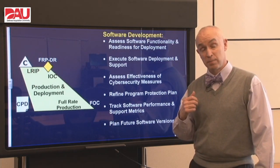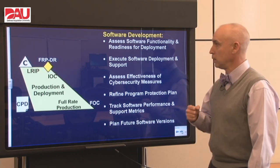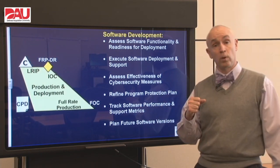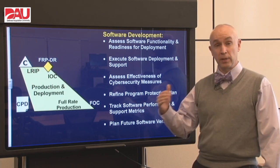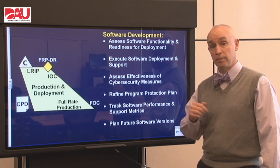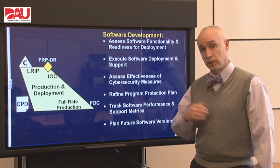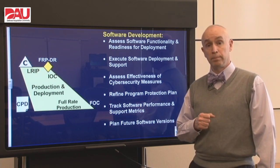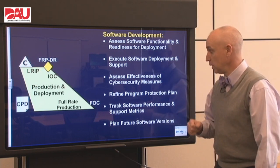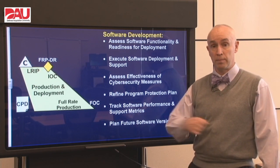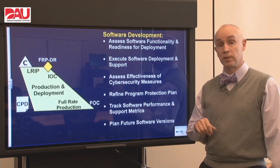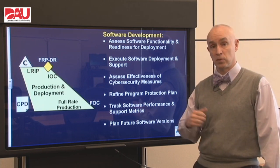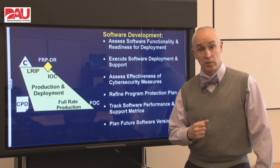Our software developers are often still doing some development even after Milestone C. They need to assess that their software is functional and ready for deployment, execute that deployment and support, and make sure there's a real plan for how different software builds get out to the field and that training is done. They also need to keep their finger on the pulse of cybersecurity, ensuring the system can withstand attacks and continuing to refine the program protection plan with field feedback. We want to track performance and support metrics for software and plan for future software versions, since software is something we continually update on a system.